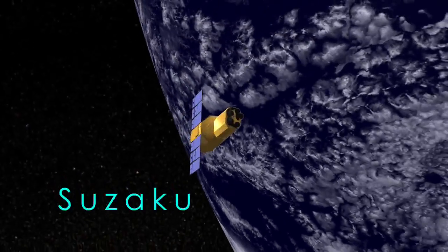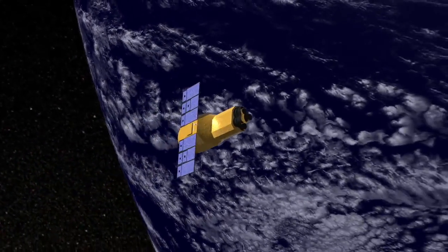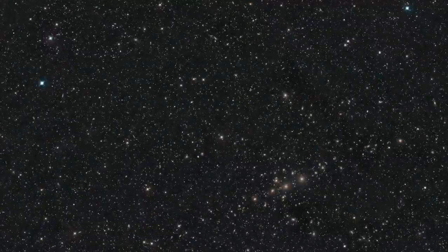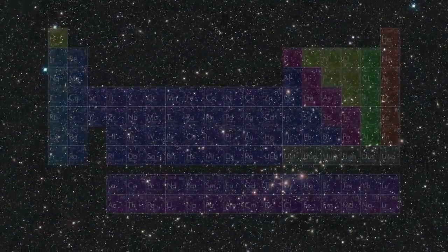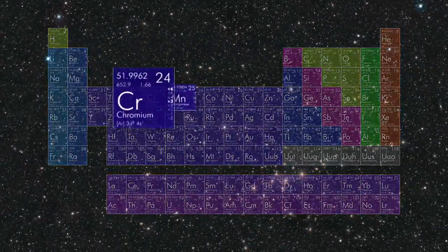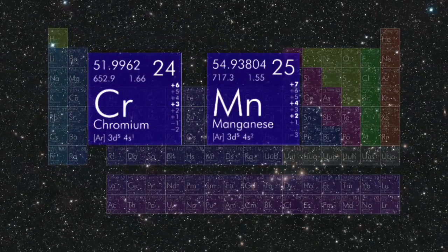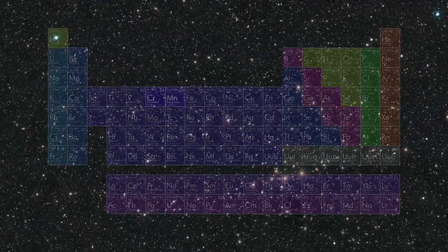Suzaku is an orbiting X-ray observatory operated jointly by NASA and the Japanese Space Agency, and it recently spotted the metals chromium and manganese in intergalactic space for the first time. It's the largest known concentration of rare metals in the universe.